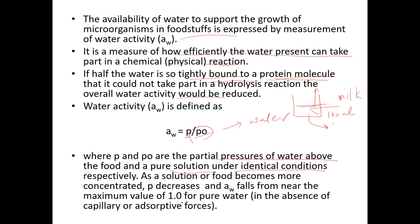Pure water has a water activity value of 1, meaning 100% water. As a food solution becomes more concentrated — for example, you add sugar or salt — the water gets bound and is no longer free water, so the P value decreases.